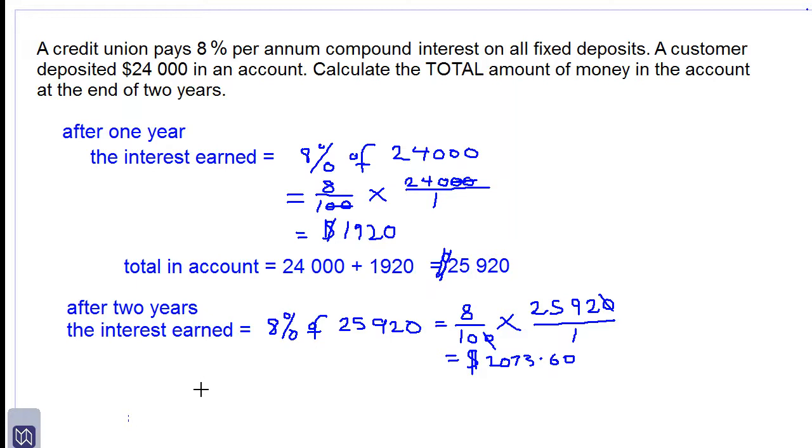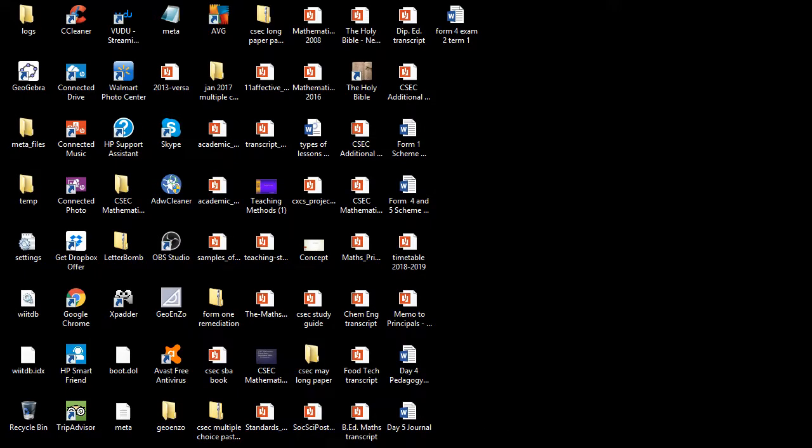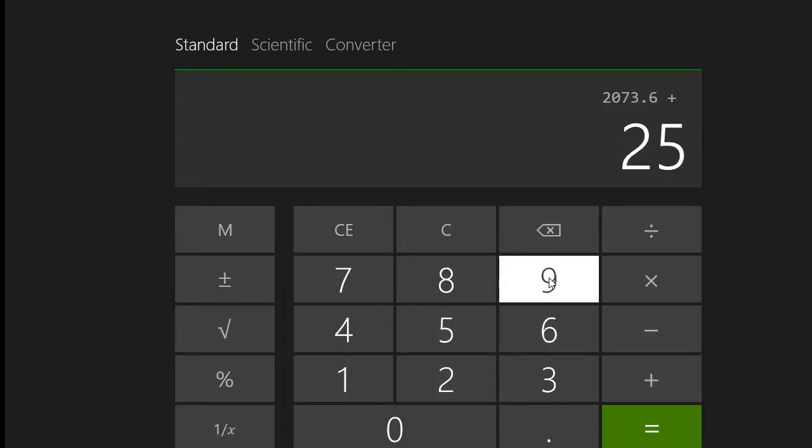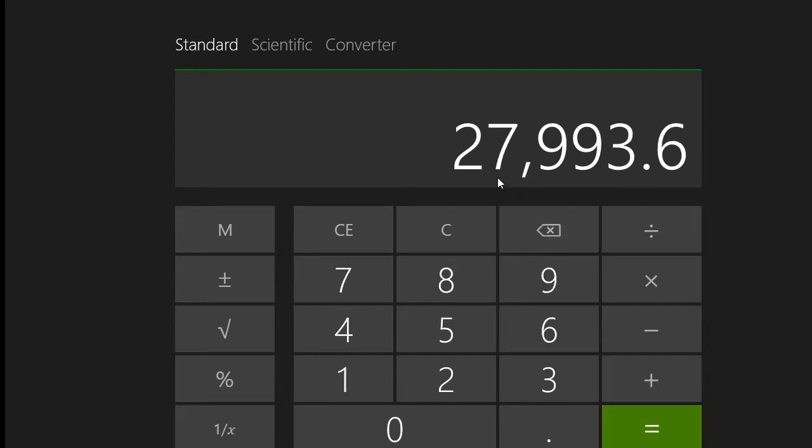So now the total in the account will be equal to $25,920 plus $2,073.60. We are adding $25,920 to this interest of $2,073.60. Let's do that. And we get $27,993.60.